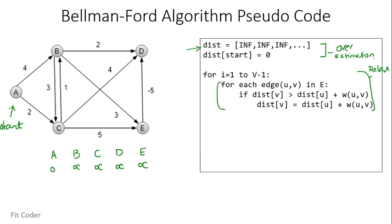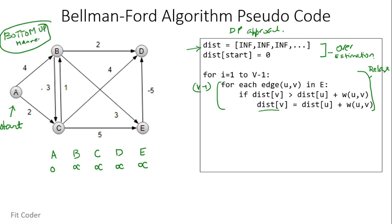We perform the relaxation operation V minus 1 times, which can be considered a dynamic programming approach. The algorithm calculates shortest paths in a bottom-up manner: first it calculates distances at most one edge away, then two edges from the start vertex. The overall idea is: if we have calculated the shortest path with at most I edges, then an iteration over all edges guarantees a shortest path with at most I plus 1 edges. Since there can be V vertices and one is already marked as start, we do relaxation V minus 1 times.